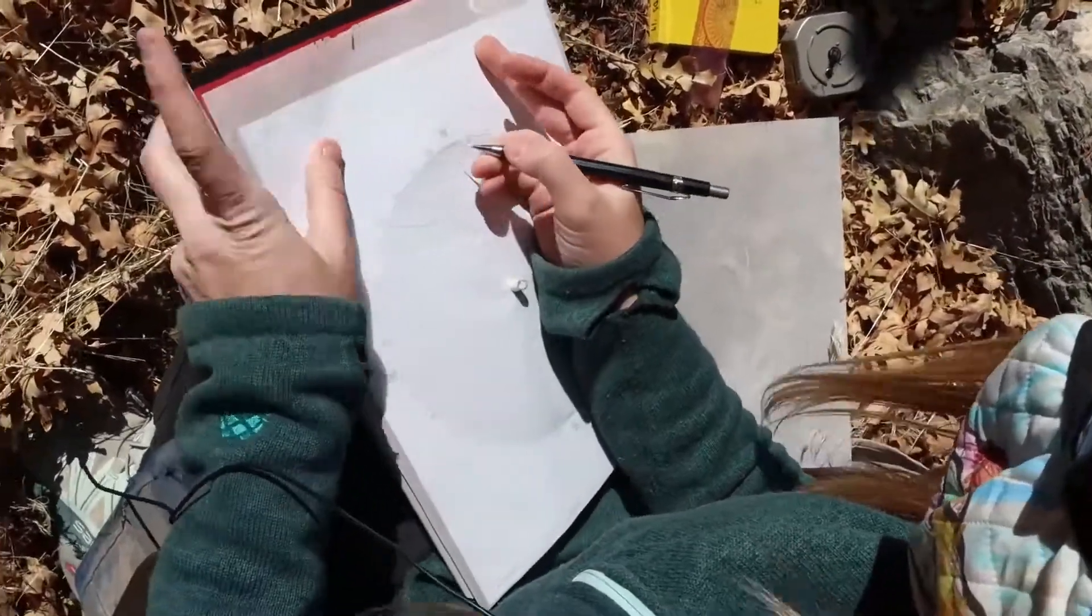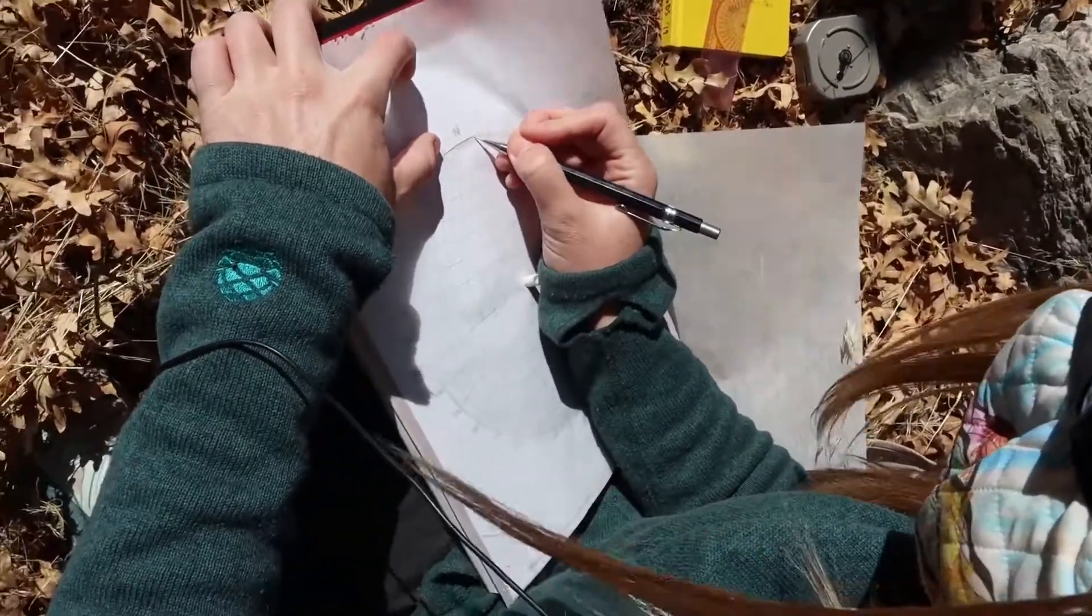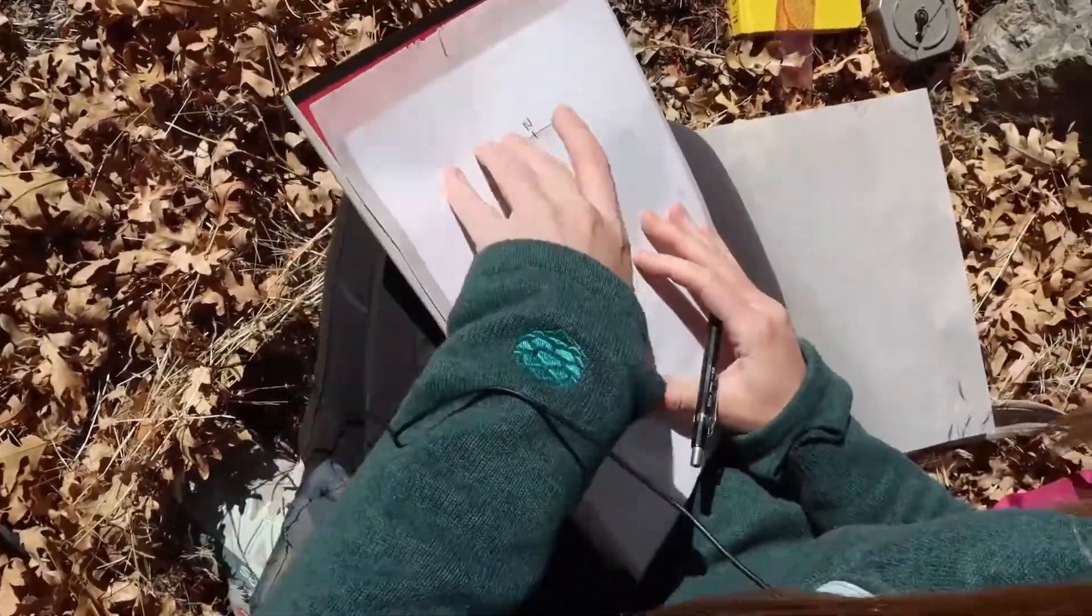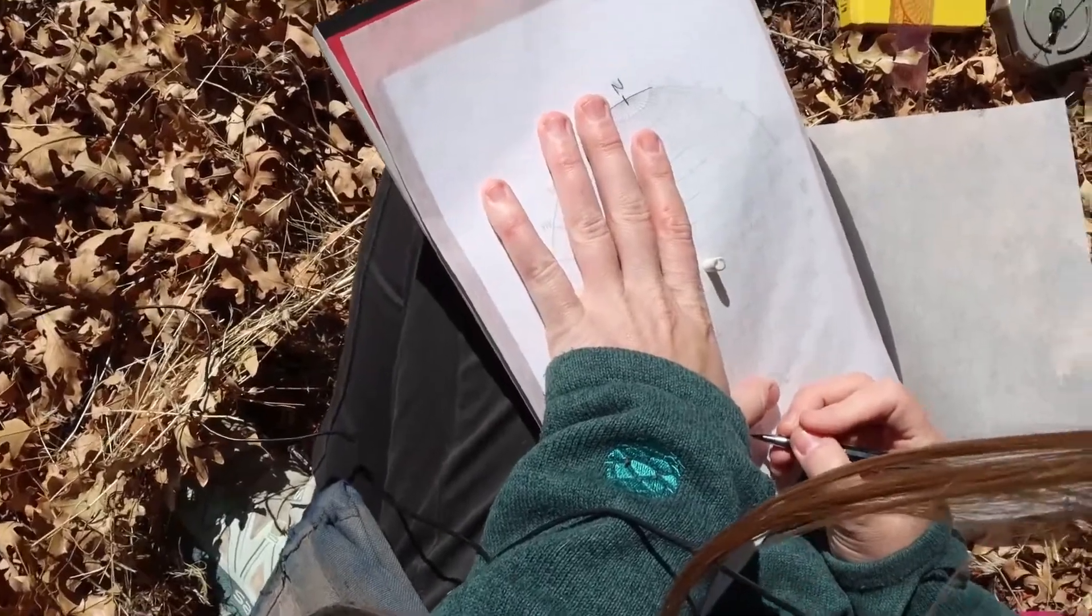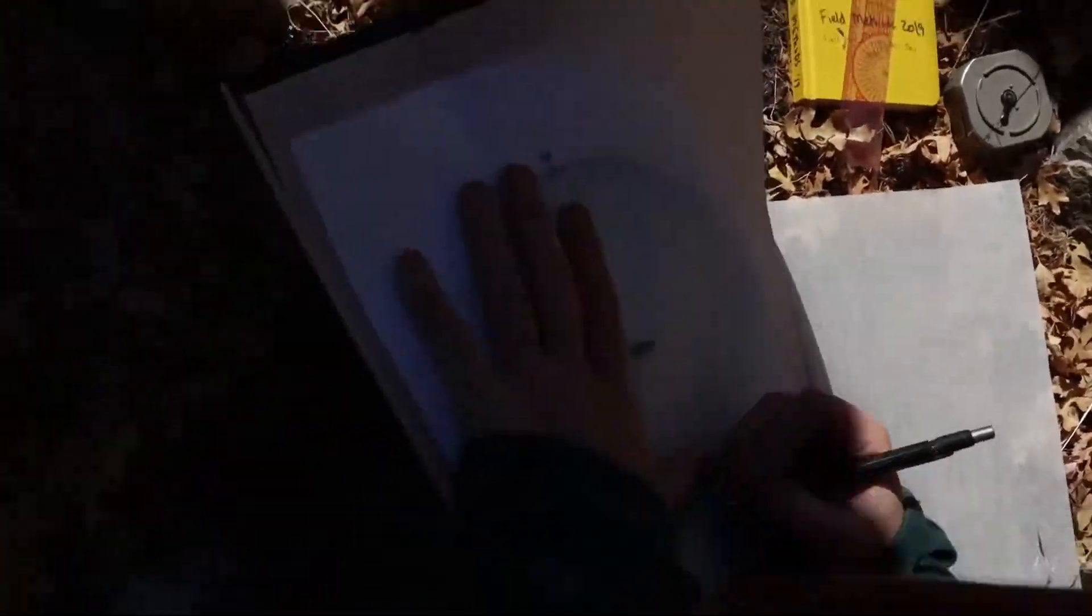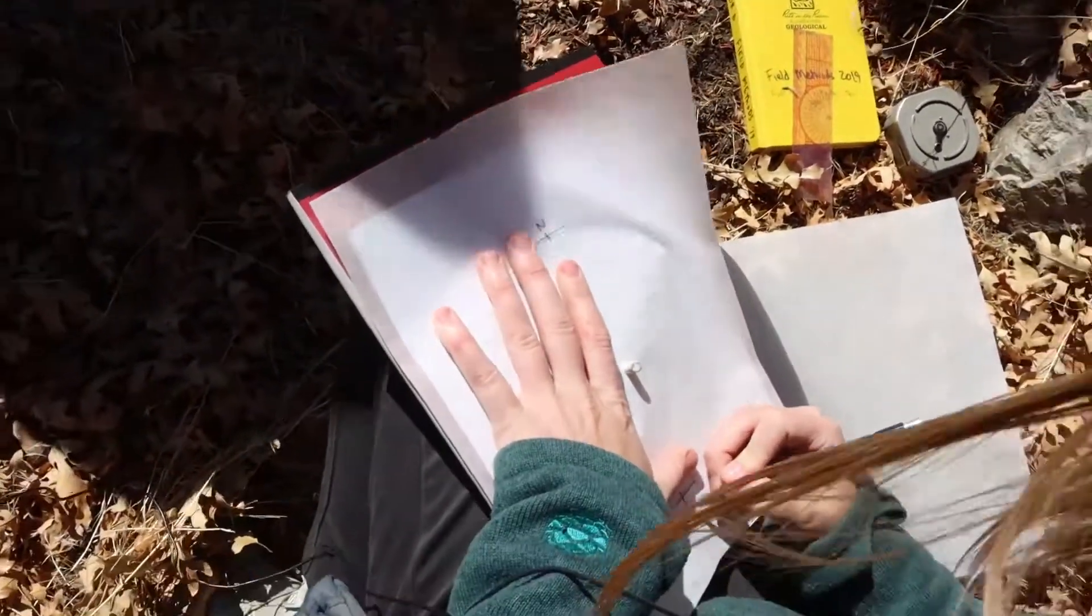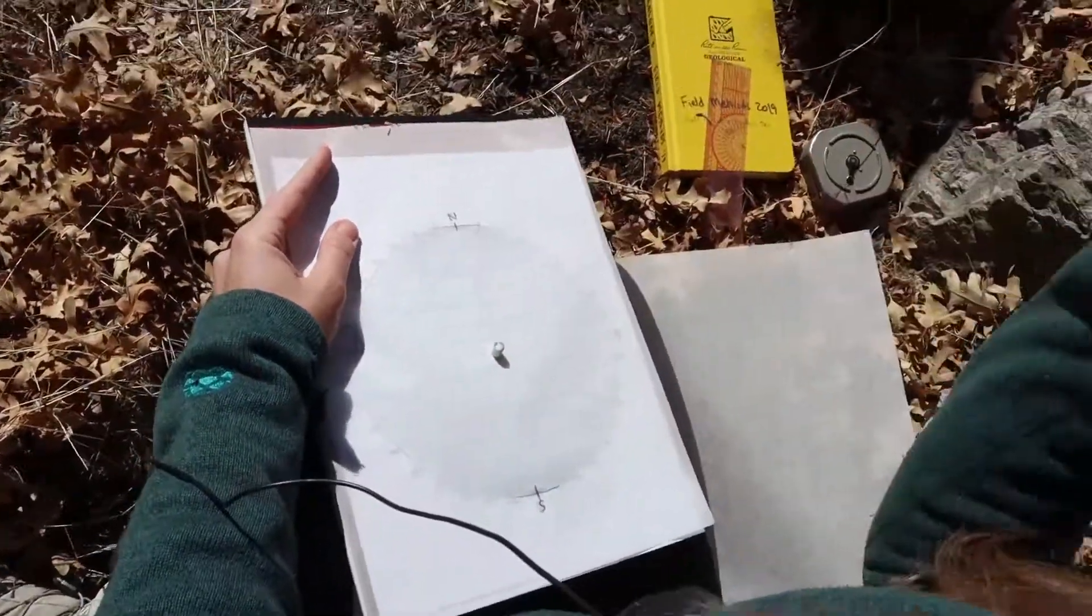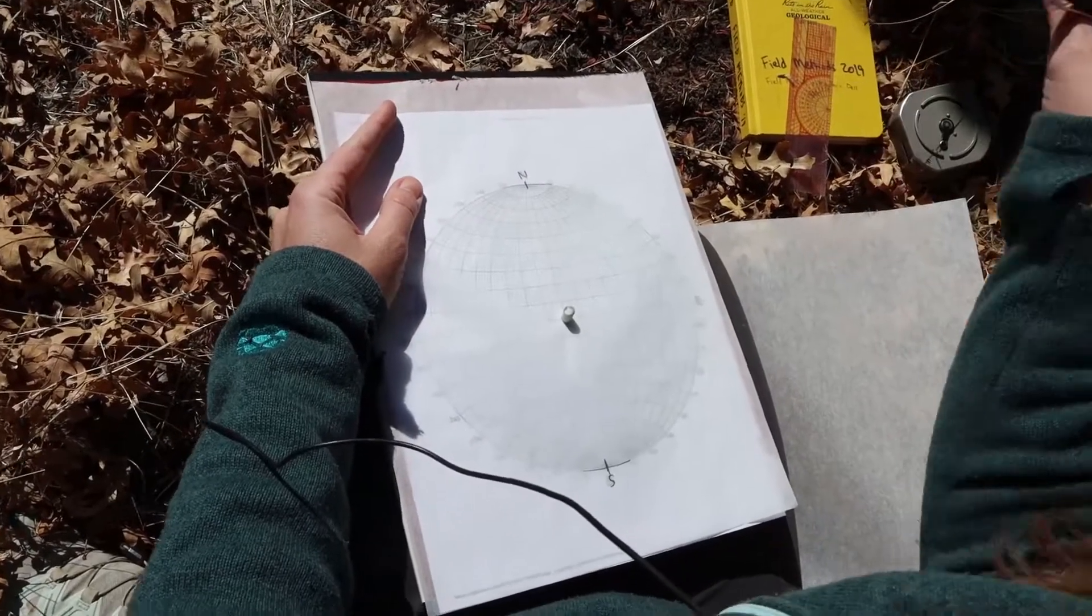The first thing I need to do is mark up my stereonet like always. I want to mark my north and my south so I don't get lost. That's the same thing I would always do with my stereonet, and all we're doing as far as our plotting is everything that we have already done before.